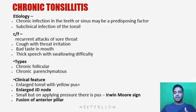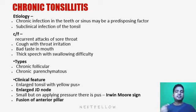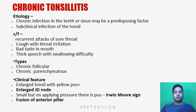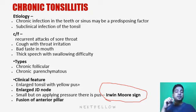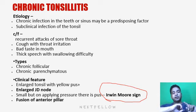Types of chronic tonsillitis include chronic follicular tonsillitis and chronic parenchymatous tonsillitis. In chronic tonsillitis, the tonsils show yellow pus discharge or whitish collection in their follicles, with enlarged jugulodigastric nodes. Applying pressure over the tonsillar tissue expresses cheesy white material — this sign is known as the Irwin Murray sign. Tonsilloliths may form from food accumulated in the crypts, and there may be fusion of the anterior pillar with the tonsillar capsule.